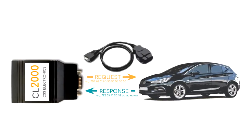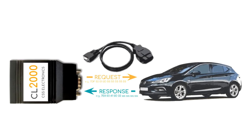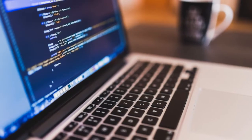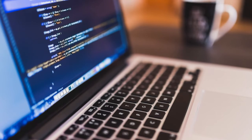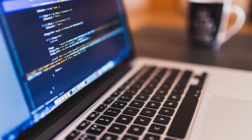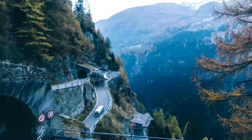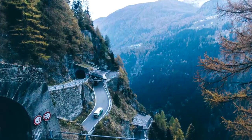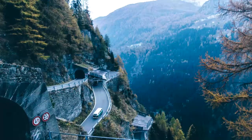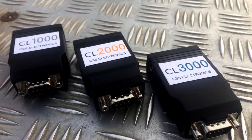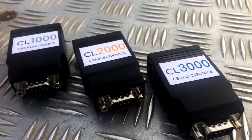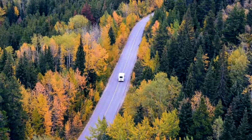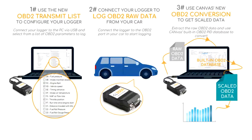First of all, your OBD2 logger needs to be set up to request the messages you want. Second, you need to set up a script to convert the raw OBD2 data. In effect, this means a lot of people have to give up on this due to the hassle. Luckily, the CANLogger X1000 and our free Canvas software solves this in a simple way. Let's explain how.